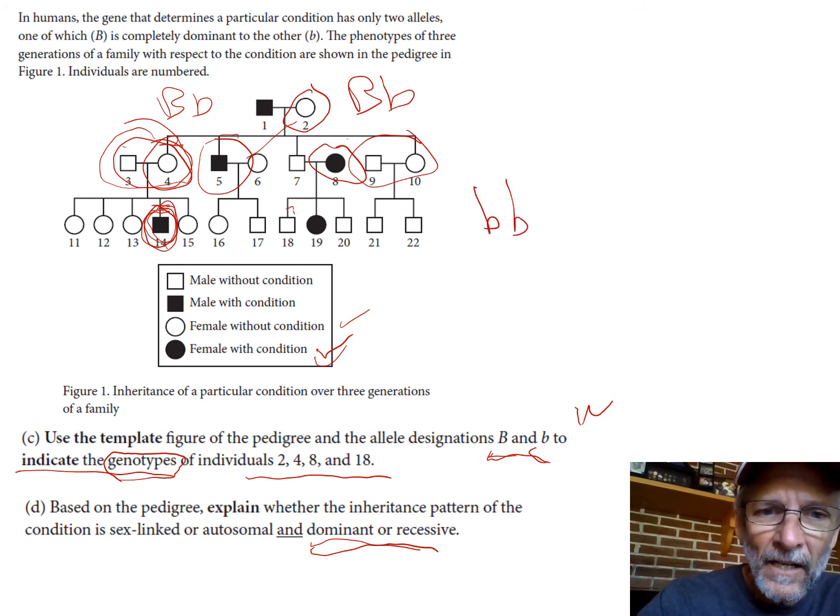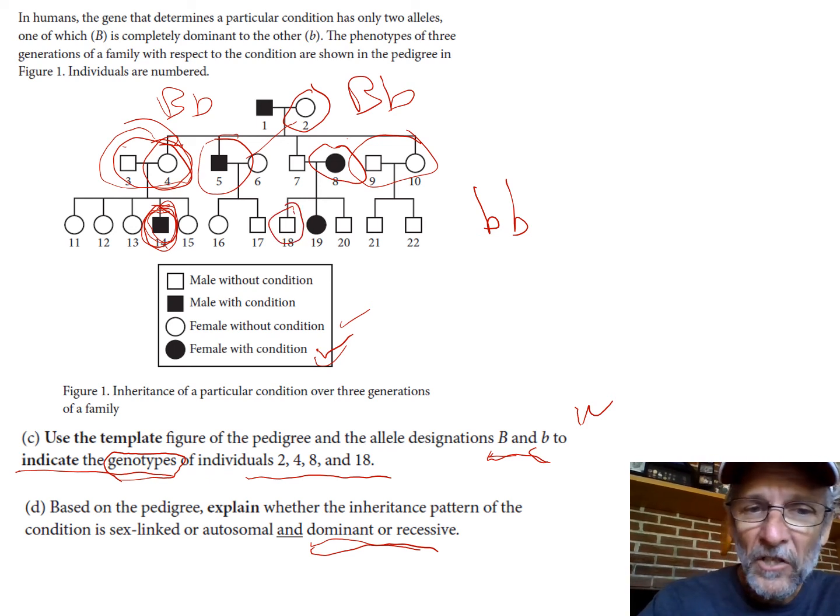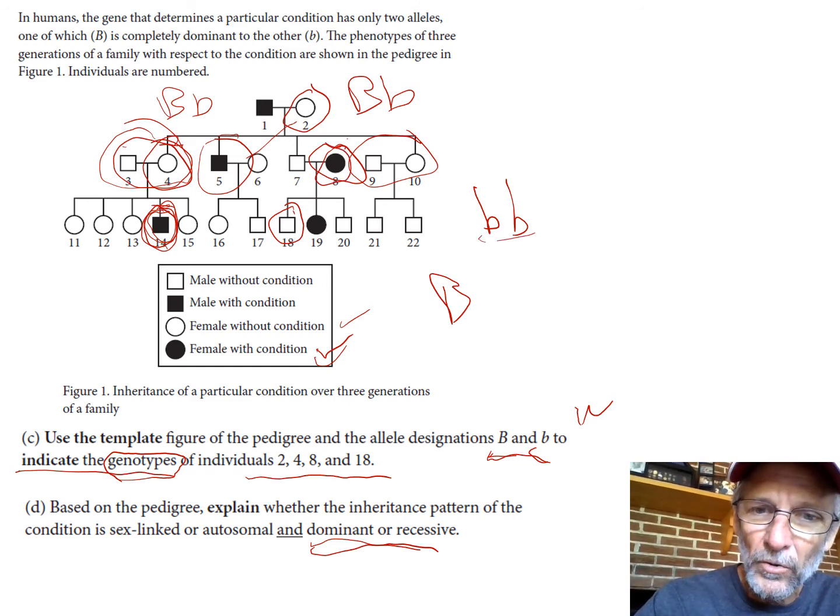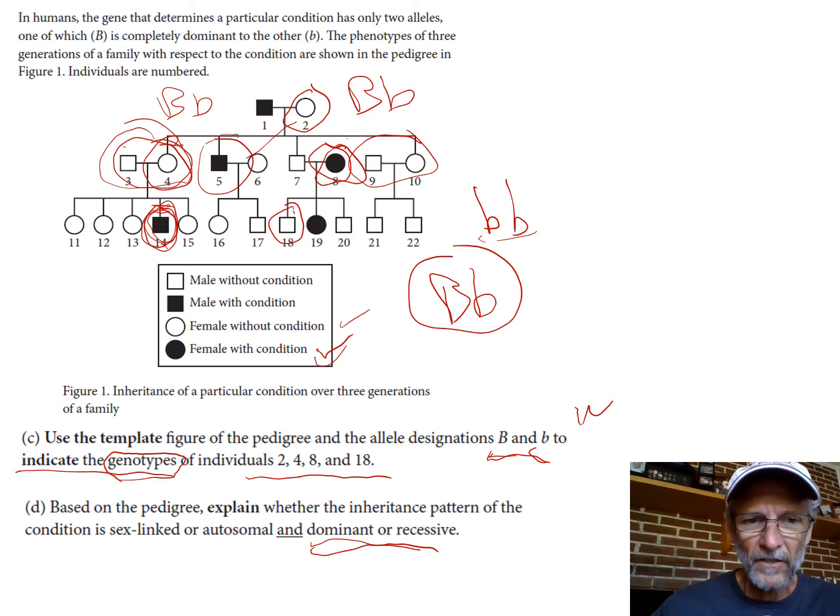Number eight's easy, we've established that that's recessive so number eight is little b little b. Number 18 with the same kind of basic logic but now applied in a different way - number 18 has the dominant trait, has a big B gene, but mom over here which we just identified has two little b's, must have given all her kids a little b, so 18 is also heterozygous.